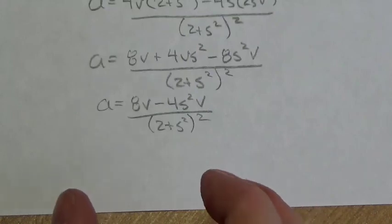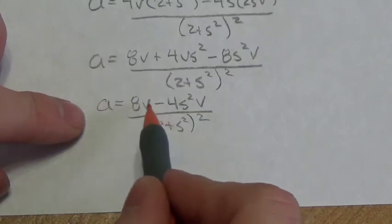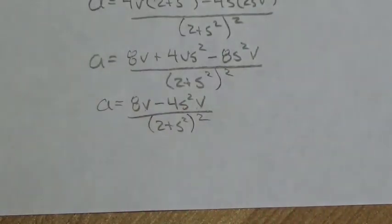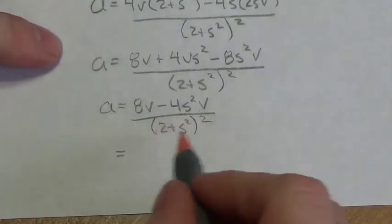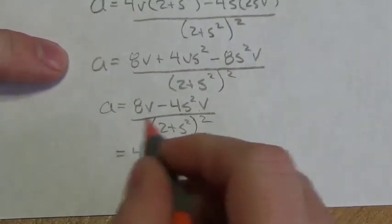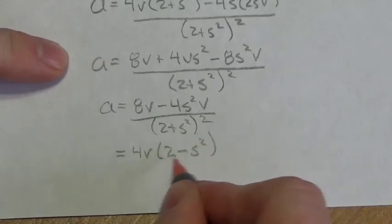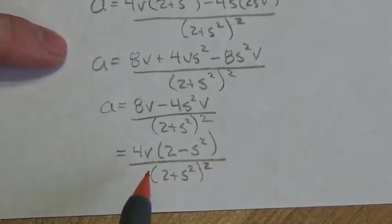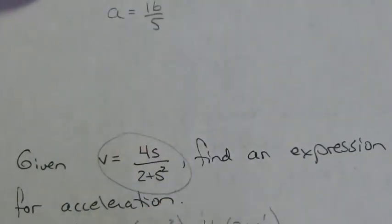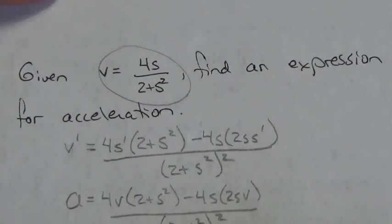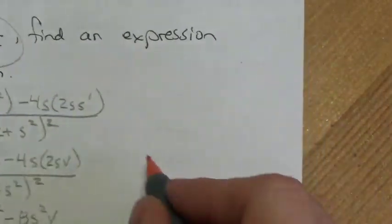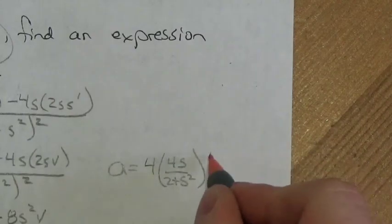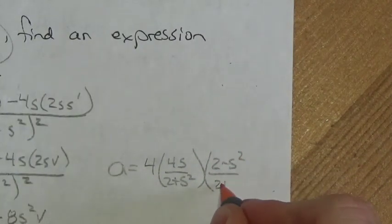This is the second derivative of displacement, and I'm writing it in terms of the first derivative of displacement. If I can avoid that, I really should. So I'm going to factor the numerator, pulling out 4v, giving 4v(2 − s²) over (2 + s²) squared. Now I'm going to get rid of v by replacing it with what v is equal to from the equation: 4s over (2 + s²).